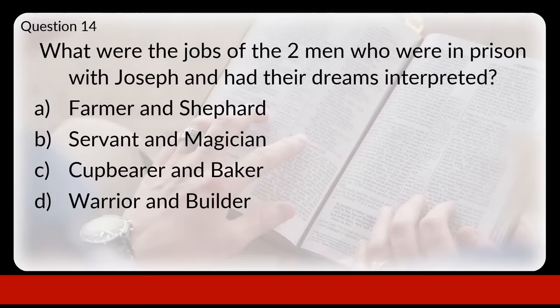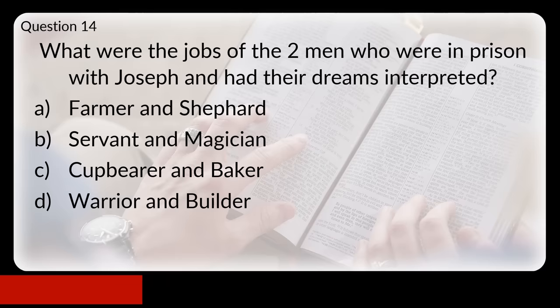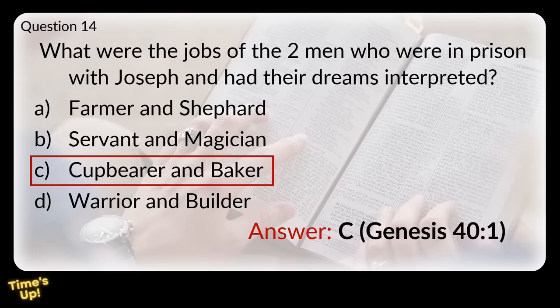Question fourteen: what were the jobs of the two men who were in prison with Joseph and had their dreams interpreted? Were they a farmer and shepherd, a servant and magician, a cupbearer and baker, or a warrior and a builder? The answer was C, a cupbearer and a baker.